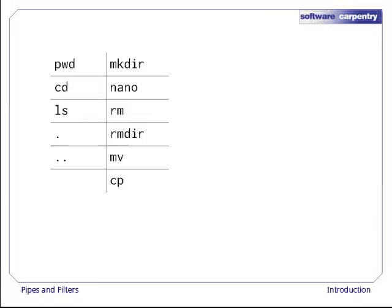To summarize, we now have a bunch of commands for moving around the file system, and three for working with text: wc to count things, sort to sort them, and head to select lines from the front of a file.